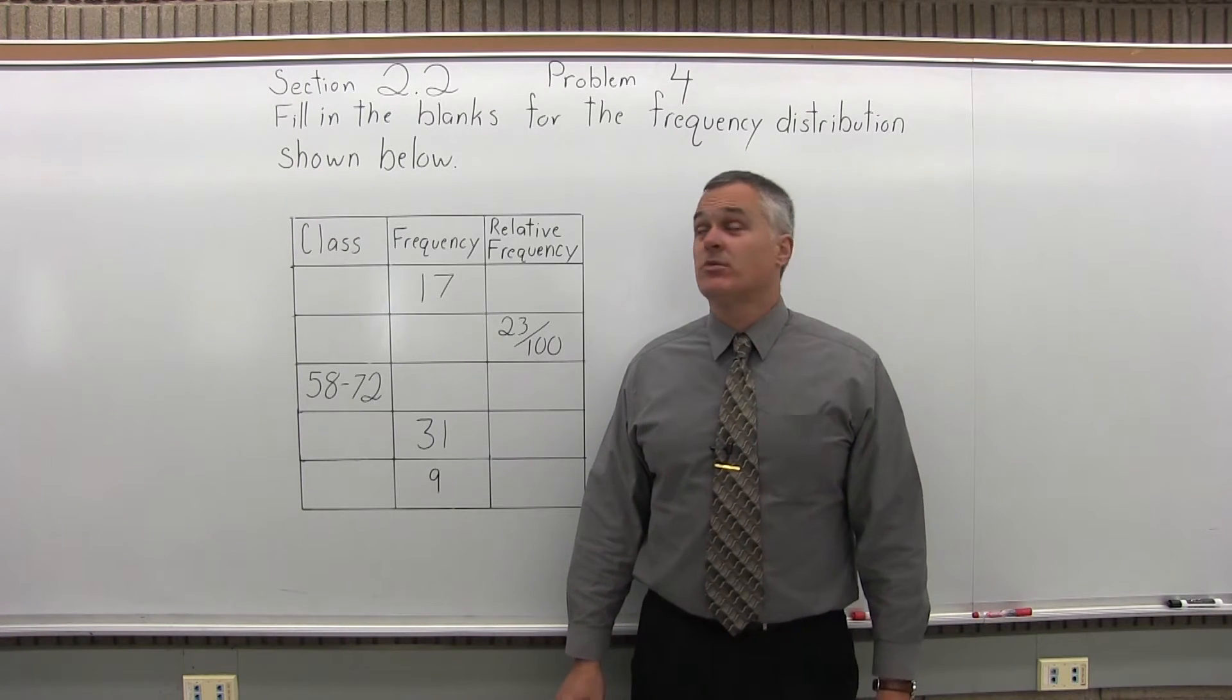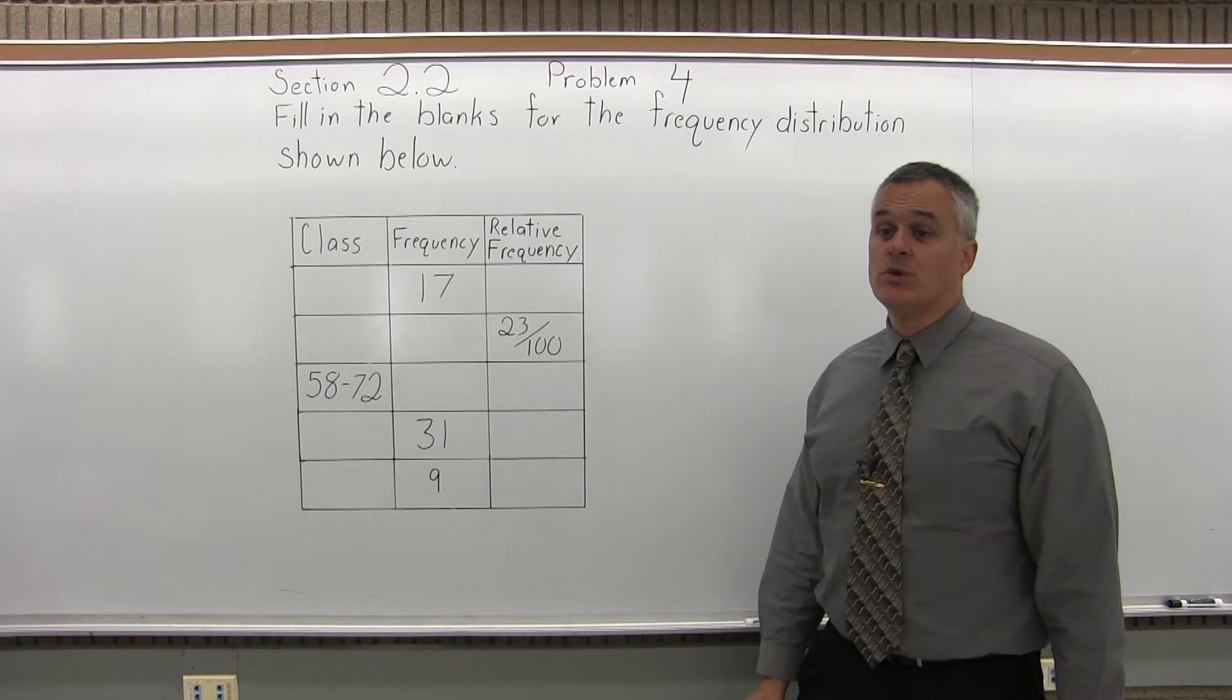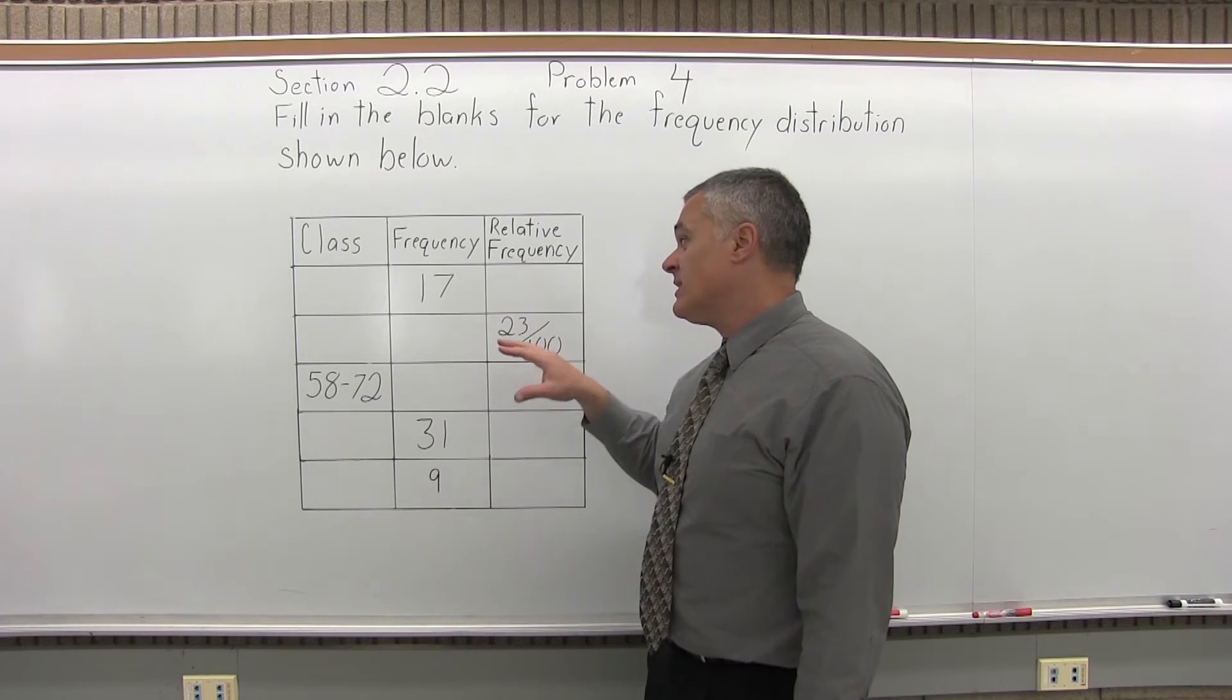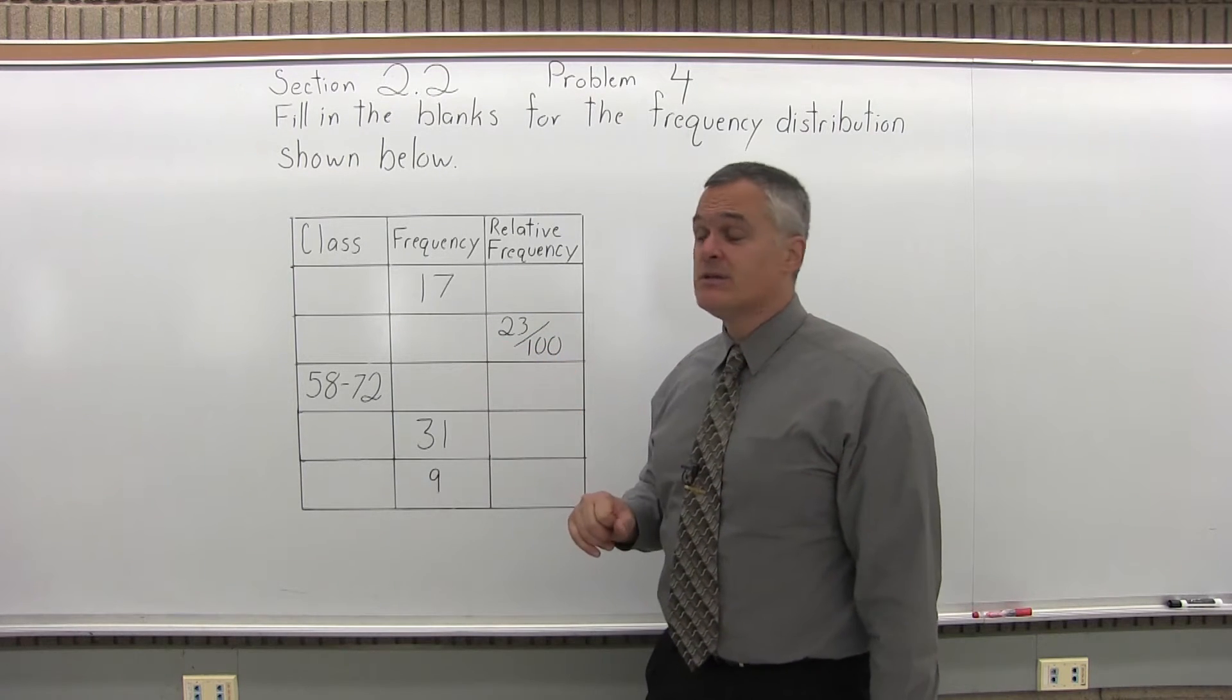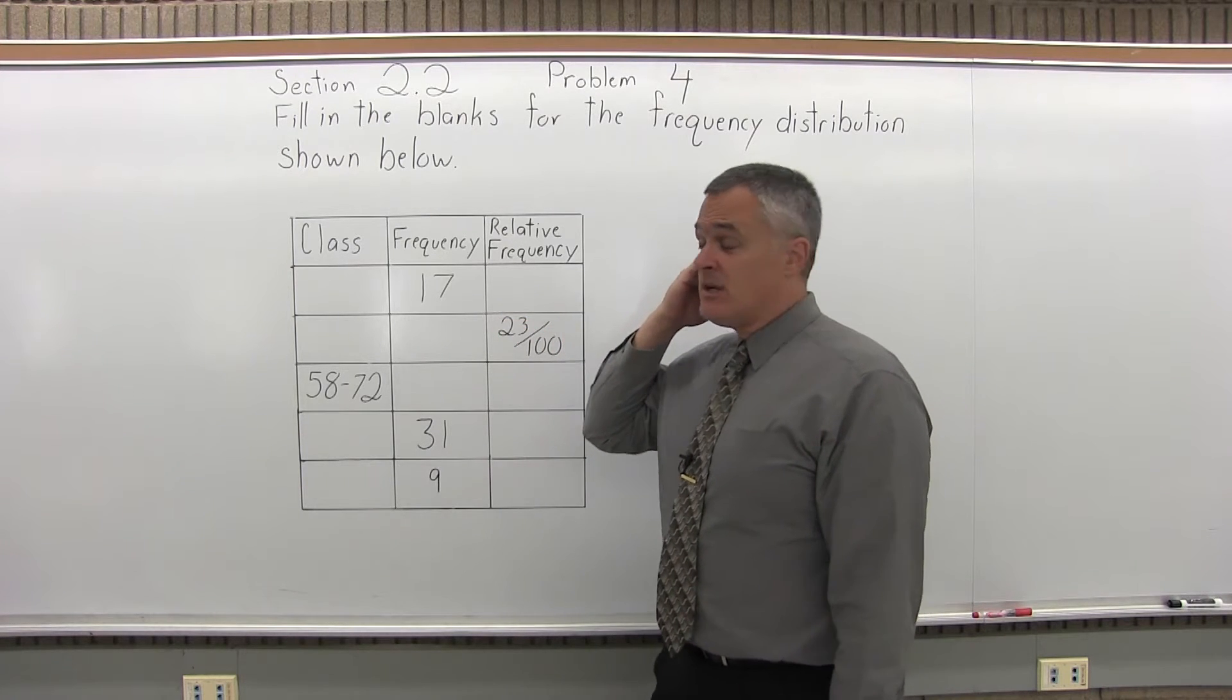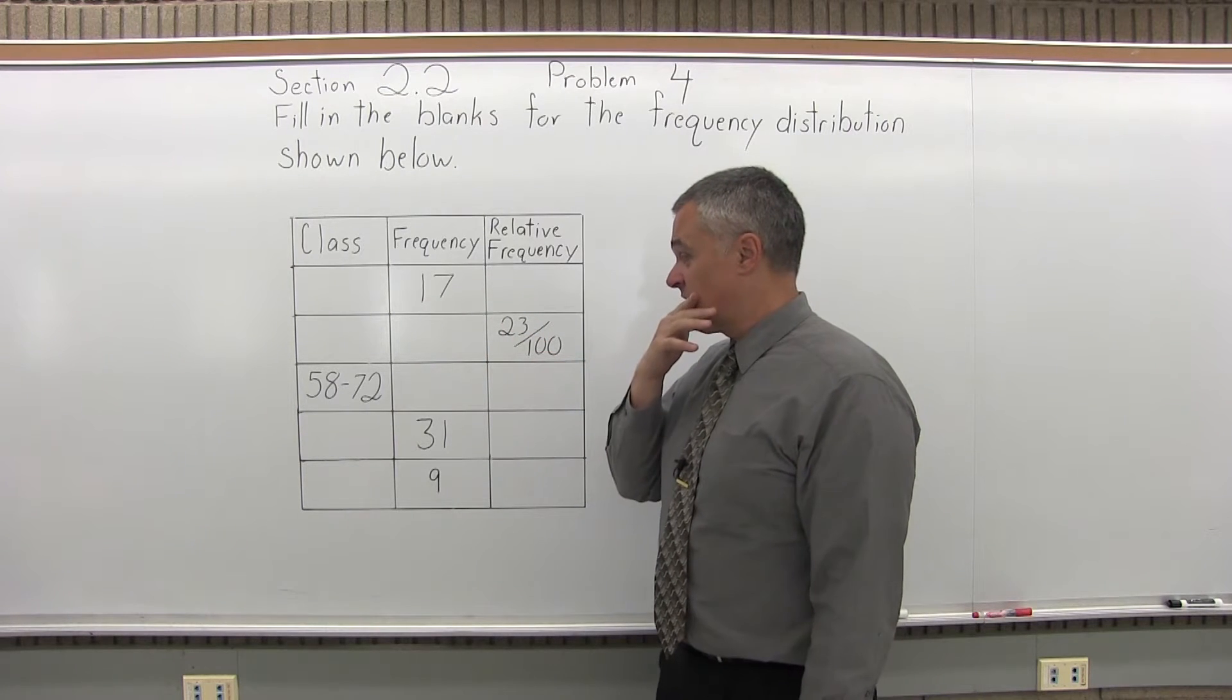This is Section 2.2, Problem number 4. It says fill in the blanks for the frequency distribution shown below. You have a frequency distribution that's partially filled out, but there are a lot of blank areas. You can really start in a lot of different places. I'll start in the left and go left to right, which makes sense.